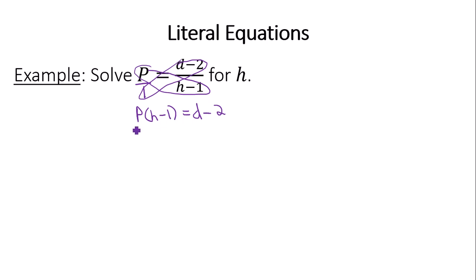So we should probably get the set of parentheses by itself first. So the first step that I would do would be divide both sides by P. And get H minus 1 equals D minus 2 over P.